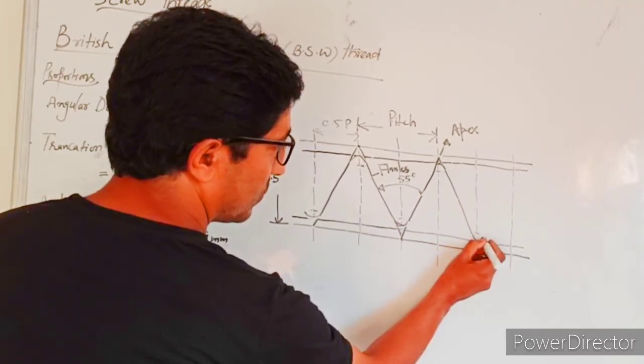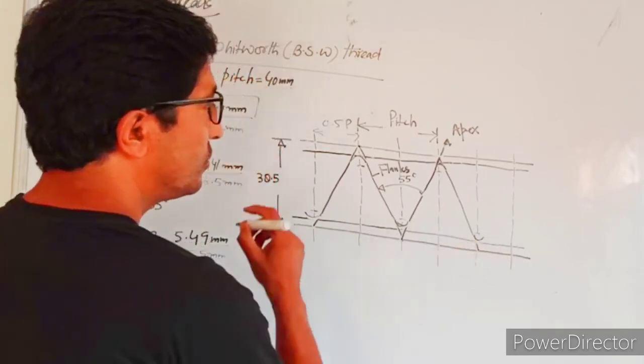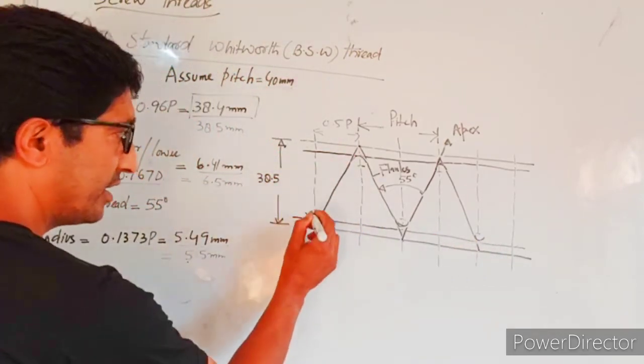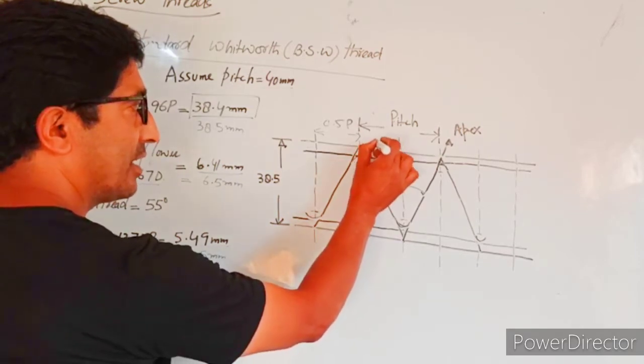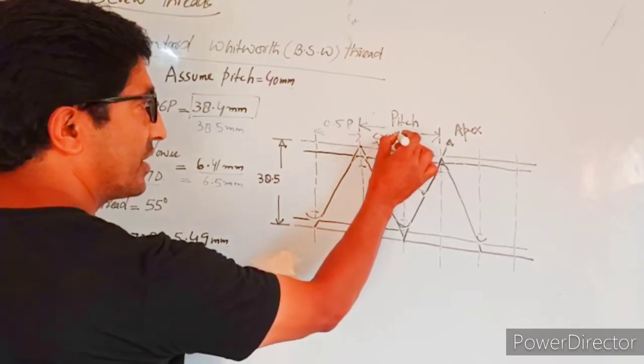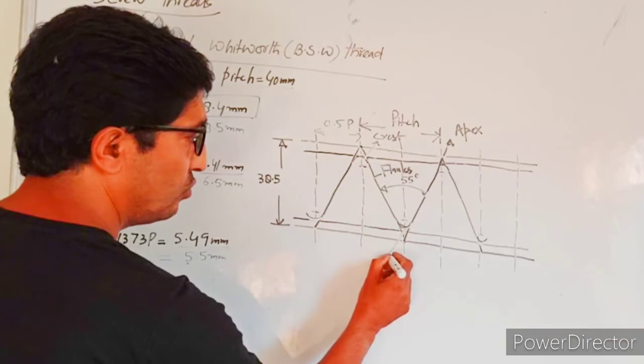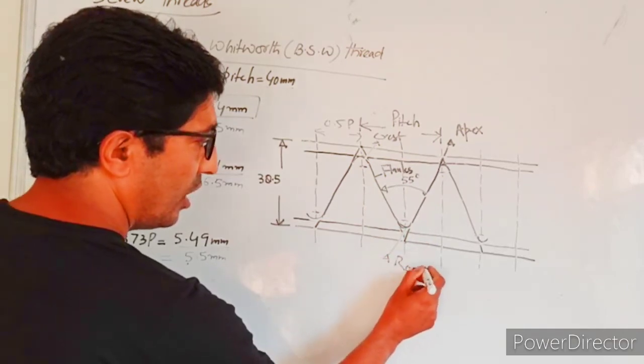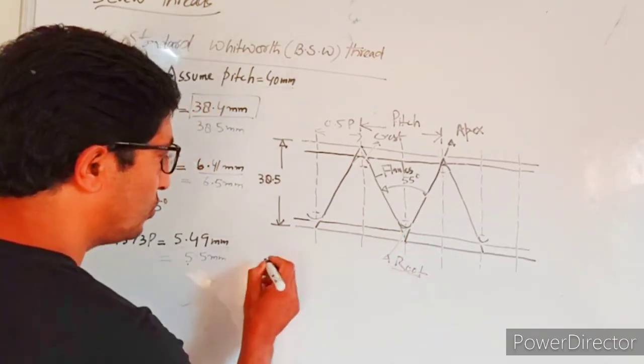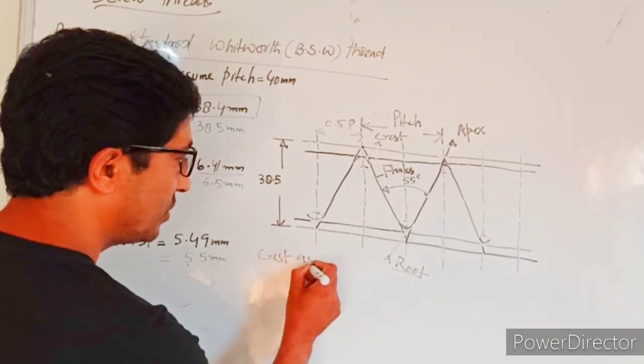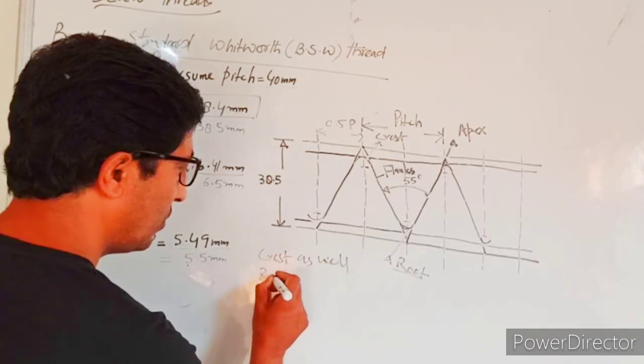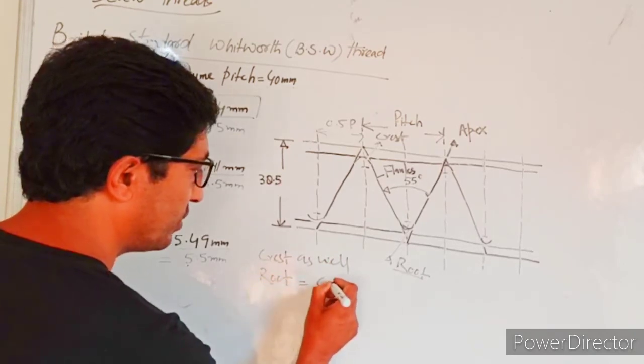As I said, we should remember that in BSW, it is called crest and root. You can remember that in BSW, both crest as well as root are curved.